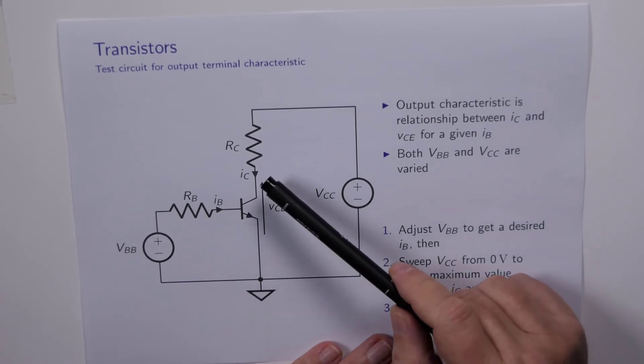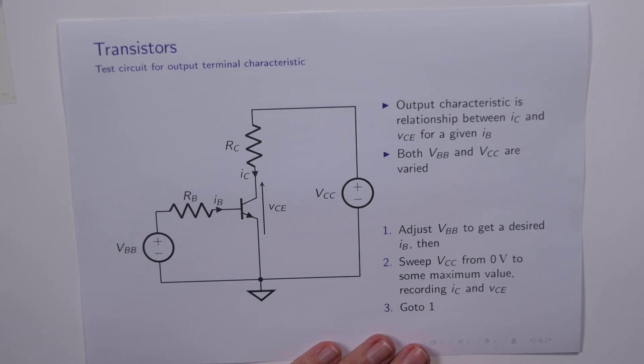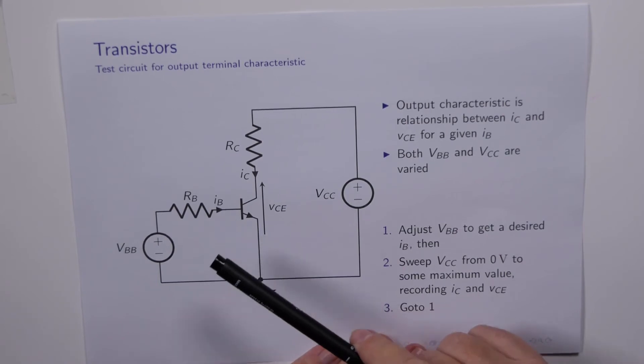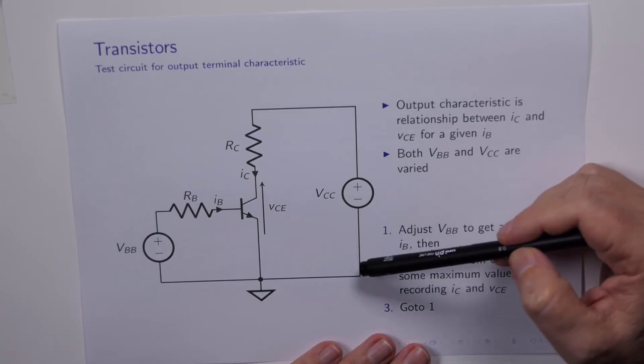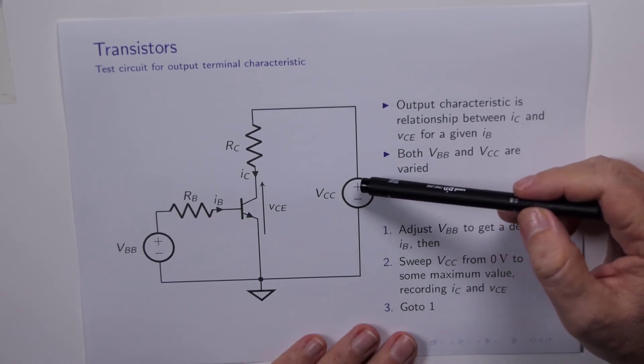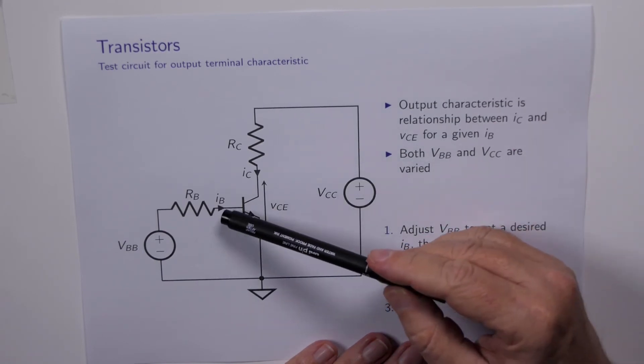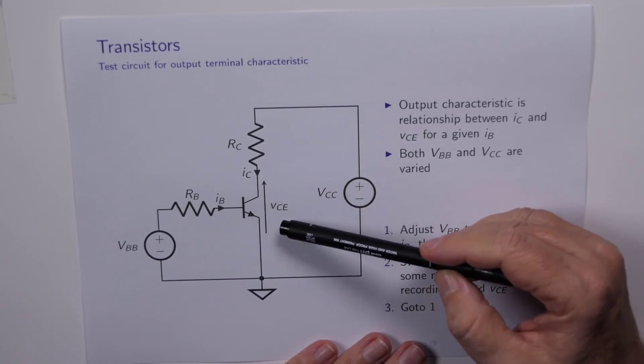The output terminal characteristic is in fact a graph of IC versus VCE. So what do we do? Well, first of all we adjust VBB until we get a certain current IB flowing. And then what we do is that we sweep VCC over a range of voltages, specifically from about zero up to some maximum value, maybe 20 volts or something like that. For each, for a given IB and a given VCC, we measure the current IC and the voltage VCE.